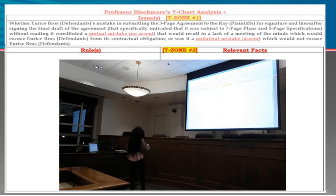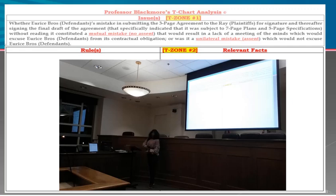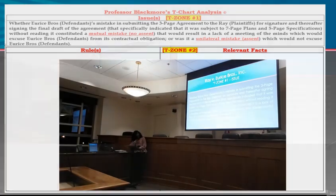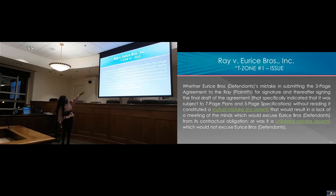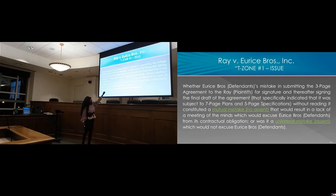The court then goes into an analysis of how you determine that. When I see case briefs that are just a paragraph of facts, I don't see how you can isolate any of those facts or how they will stand out when it's time to discuss them in class. That is my issue statement — I don't need all of this explanation, but I put it here to explain what 'mutual mistake means no assent' versus 'unilateral mistake means there is assent.' I put that up in the top part of my chart.